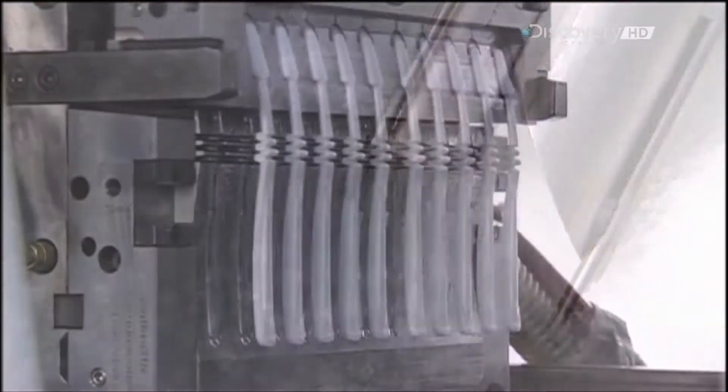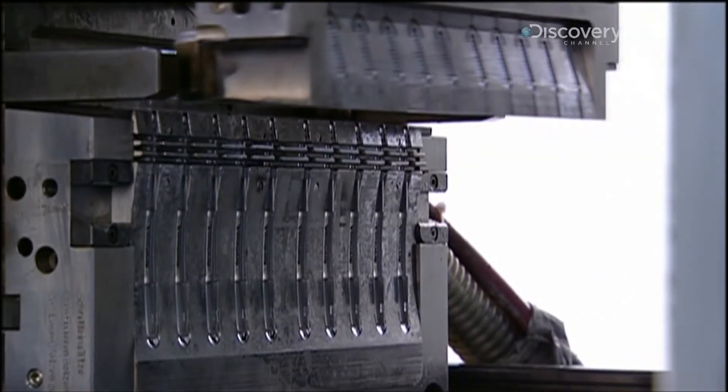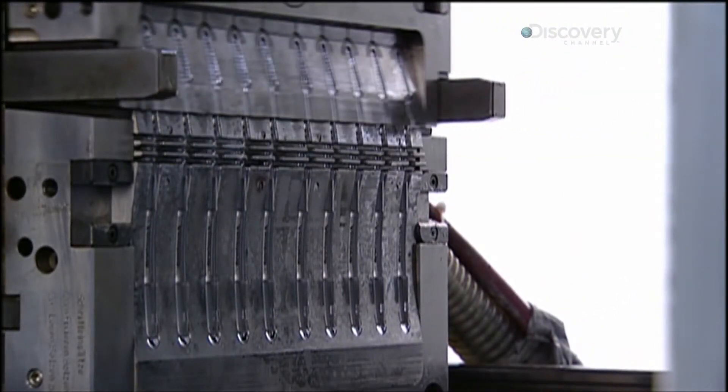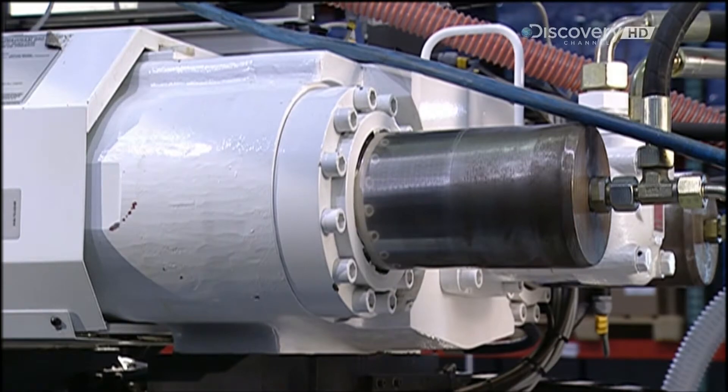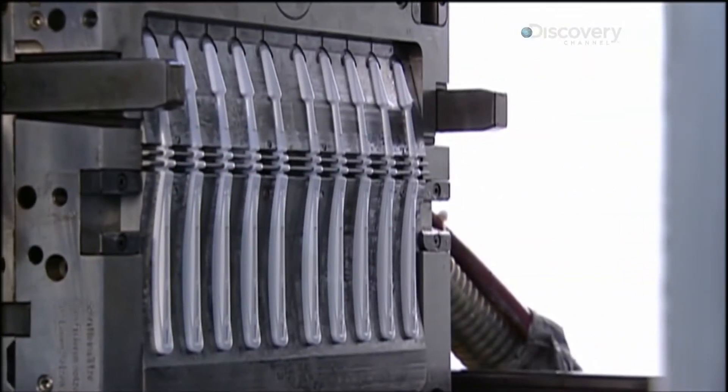A vacuum sucks them up into an injection mold machine. The machine melts the pellets into a kind of plastic dough, then injects it into a stainless steel mold forming 10 toothbrush handles at once.